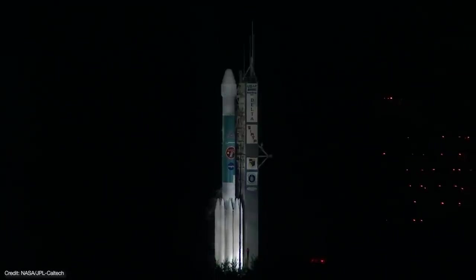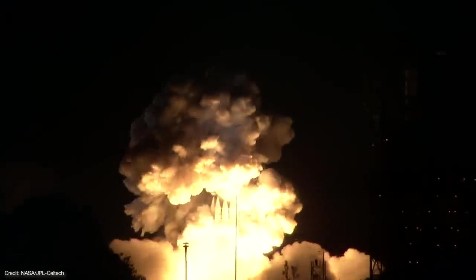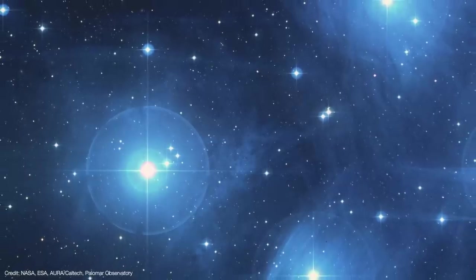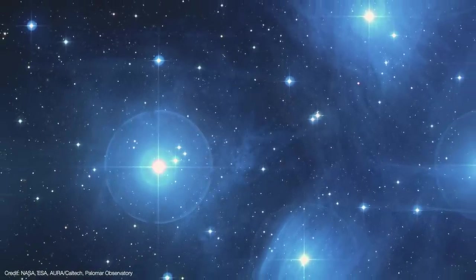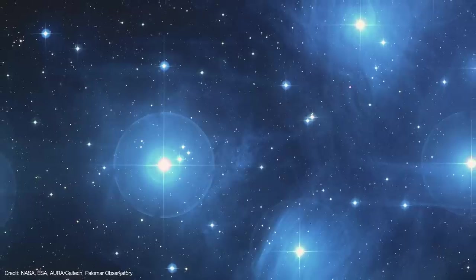Spitzer was launched from Cape Canaveral on August 25th, 2003. It joined the Compton Gamma Ray Observatory, the Chandra X-ray Observatory, and the Hubble Space Telescope as part of NASA's Great Observatories program. Combined, these telescopes gave us our clearest look at the universe from the gamma all the way into the infrared part of the spectrum. Stars are generally hot enough to radiate most of their energy in the visible part of the spectrum, and that makes them relatively easy to see.